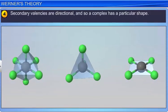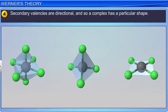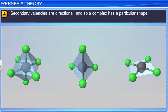The fourth postulate is that secondary valencies are directional, and so a complex has a particular shape. The number and arrangement of ligands in space determines the stereochemistry of a complex.